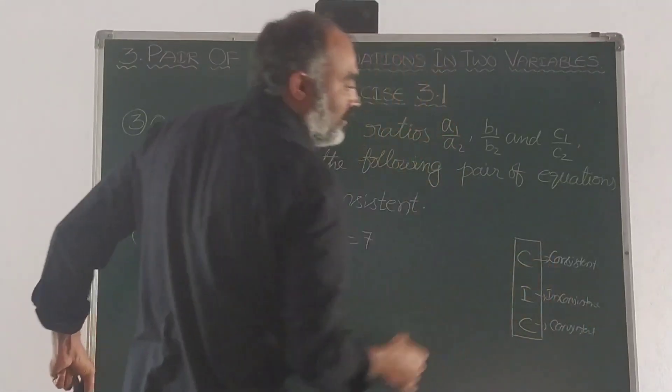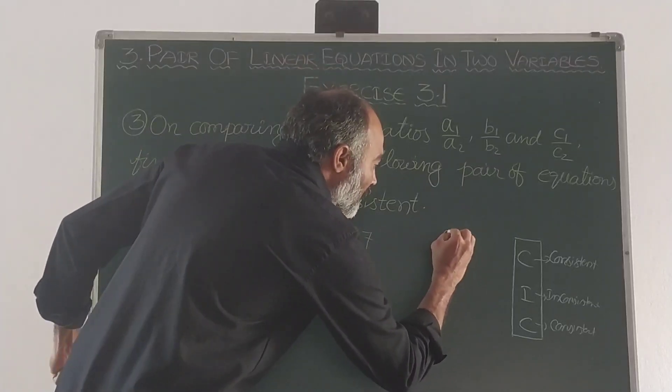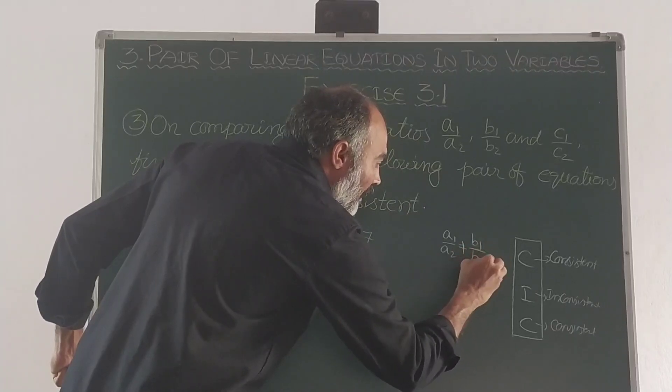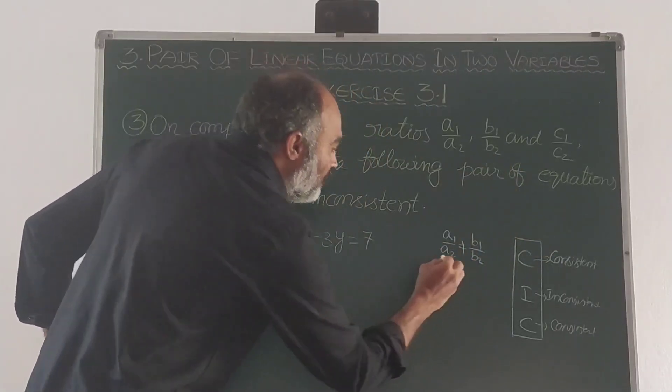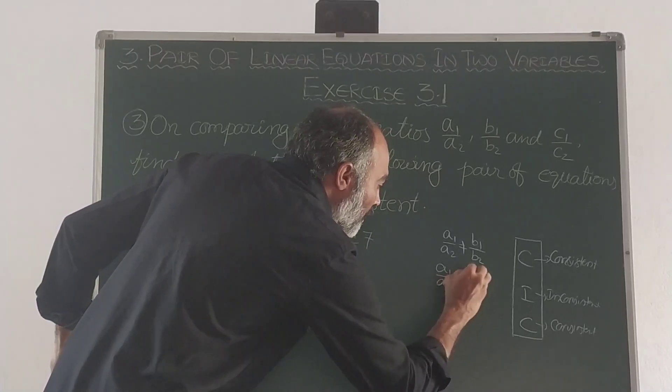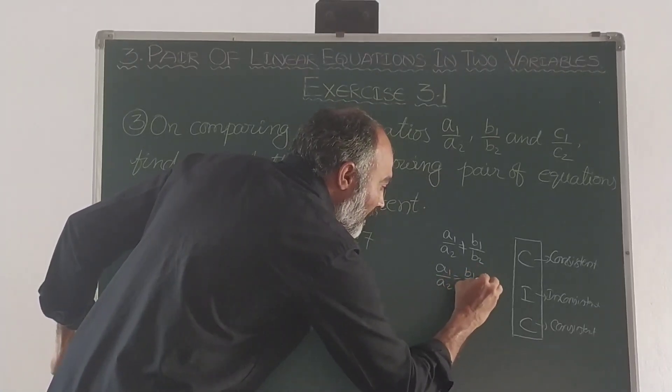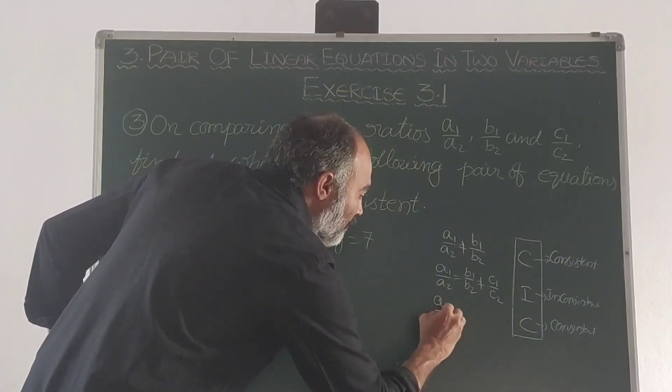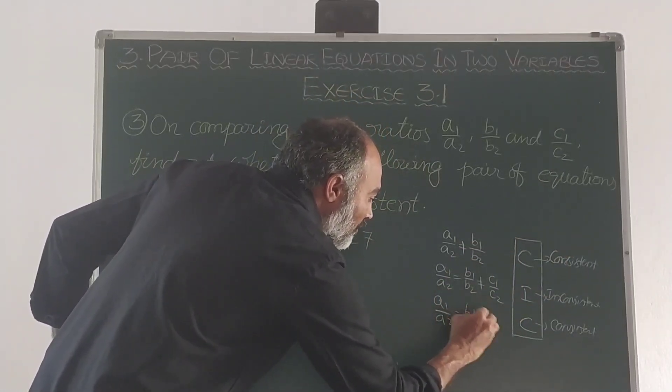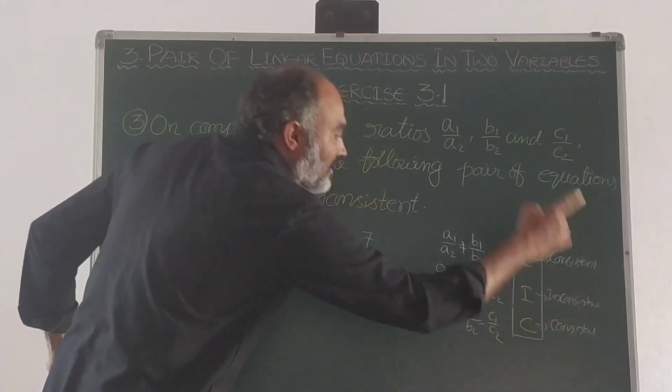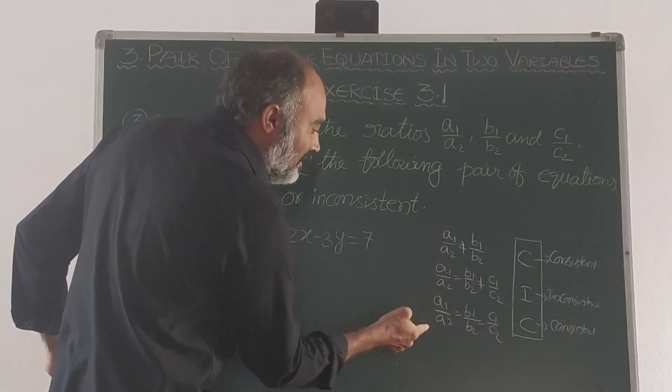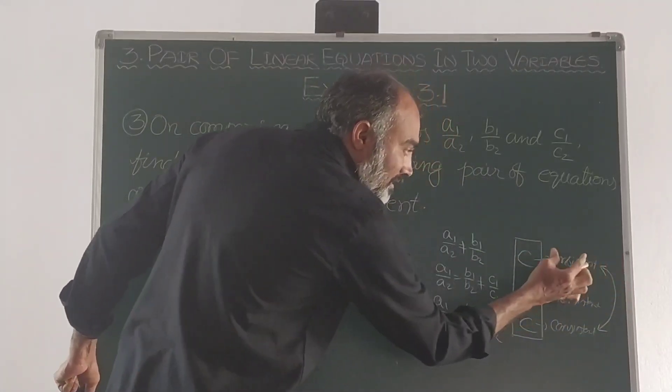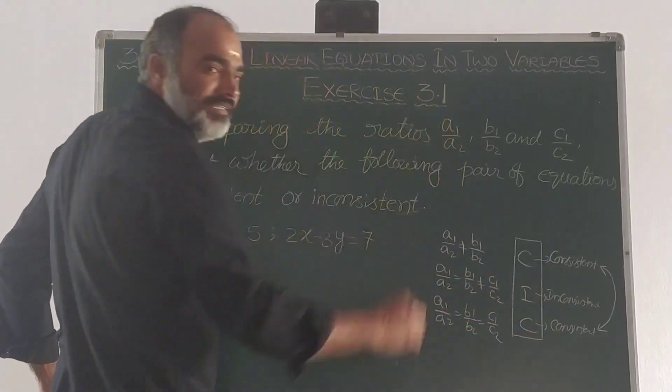The condition is: if a1 by a2 equals b1 by b2 equals c1 by c2, then it is consistent. If a1 by a2 equals b1 by b2 but not equal to c1 by c2, then it is inconsistent. If a1 by a2 not equal to b1 by b2, the condition shows the system is consistent.